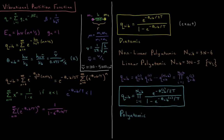This video will discuss the vibrational partition function for molecules in statistical mechanics. We want to get the partition function for vibrations of molecules, which will be a sum over all the energy levels of their degeneracy times e to the minus beta ei, the Boltzmann factor, where beta equals 1 over the Boltzmann constant times the temperature.